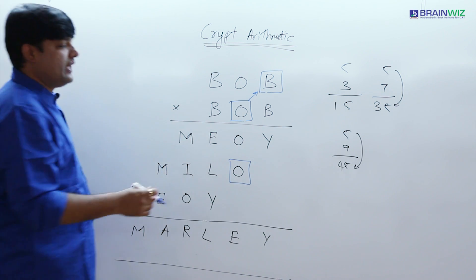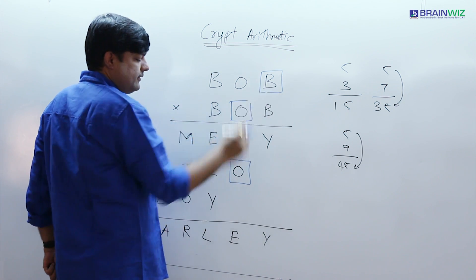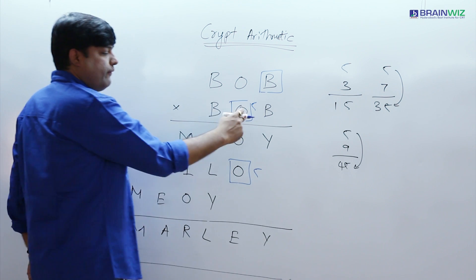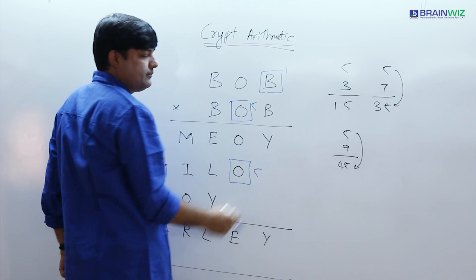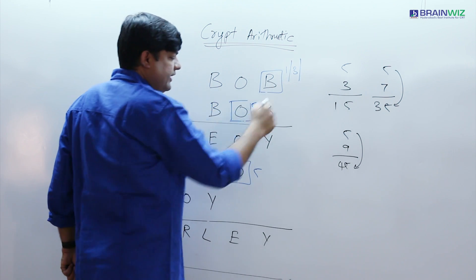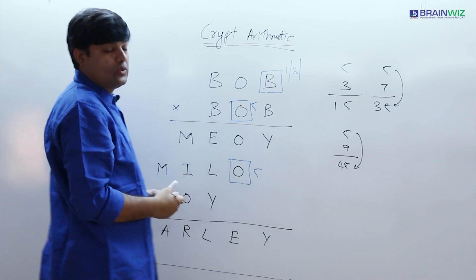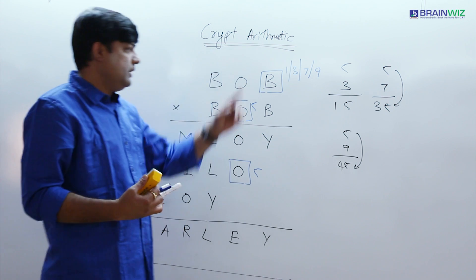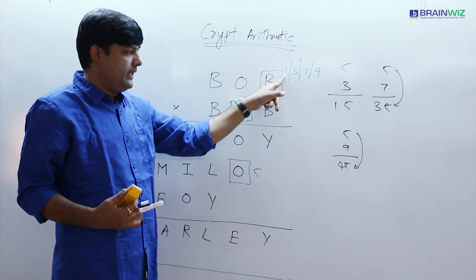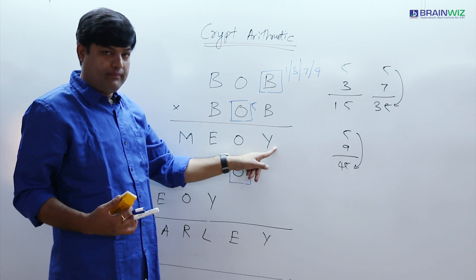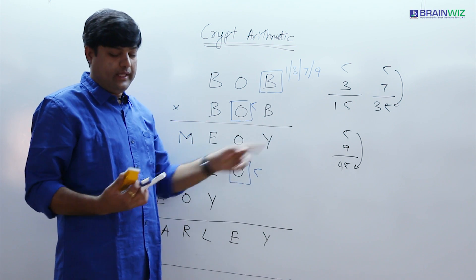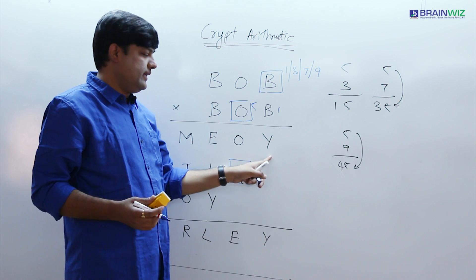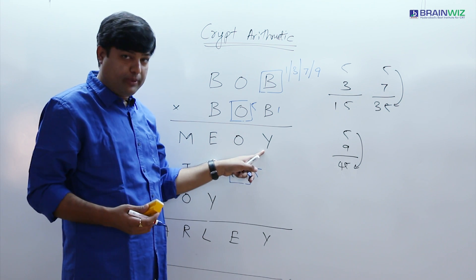Now let's try a trial. If you want the same value back, O value is 5. So 5 × 1 = 5, or 5 × 3 = 15, or you may have 7 or 9. Now this cannot be 1. B cannot be 1 because 1 × 1 makes you 1 — if B value is 1, then B value is 1 here also, and 1 × 1 = 1, which is not possible. So B cannot be 1.